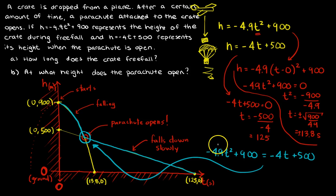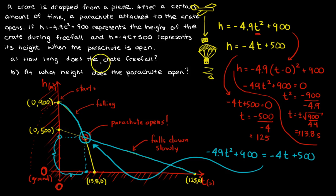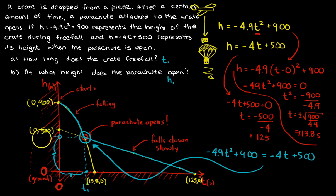It's an easy way to solve the problem. If I want to know at what height the parachute opens, that's right at the intersection point. How long does the crate free fall? It's from zero to when the parachute opens — call that T₁. What height does it open at? H₁, right there. By looking at the graph you can totally understand what's happening.